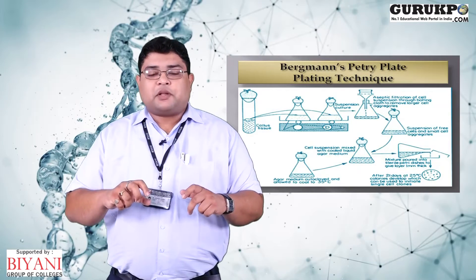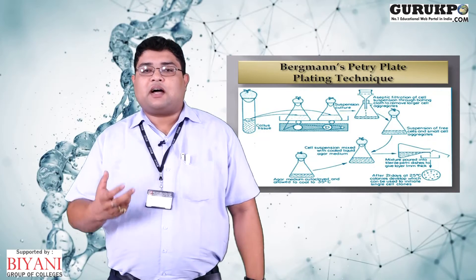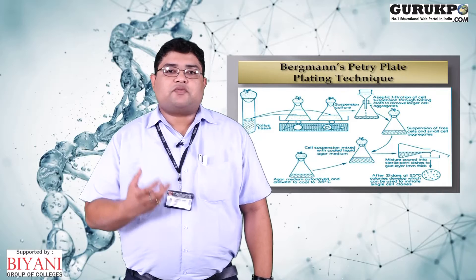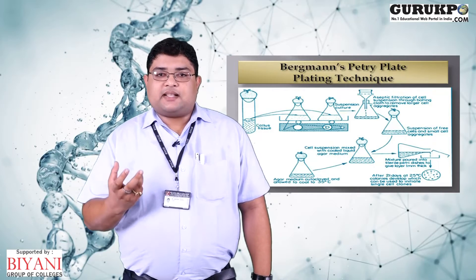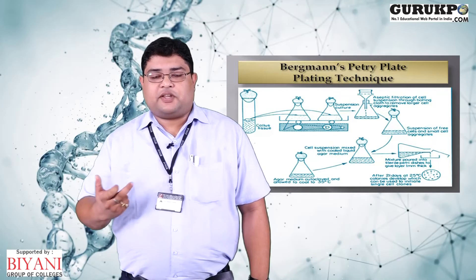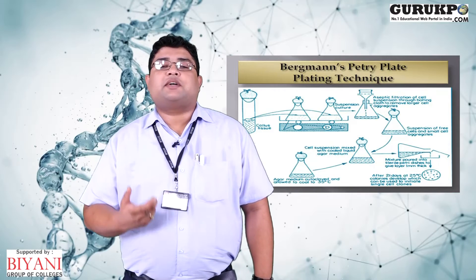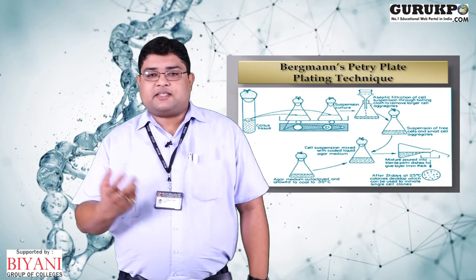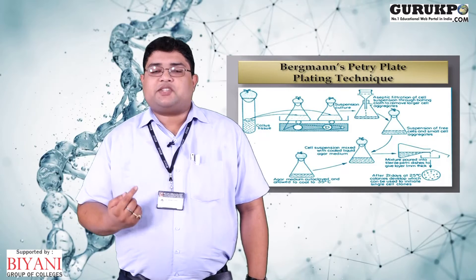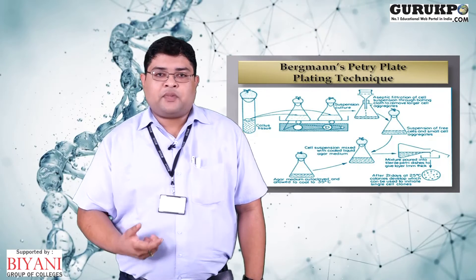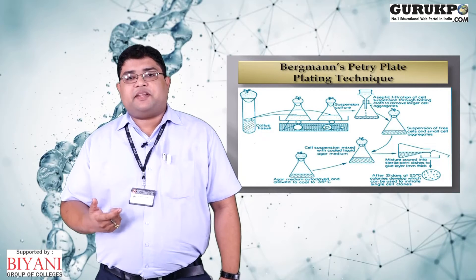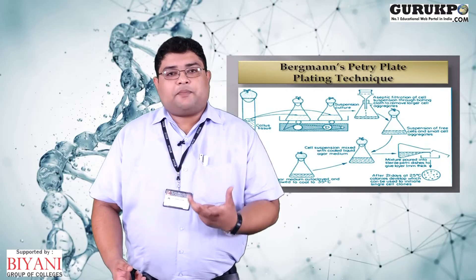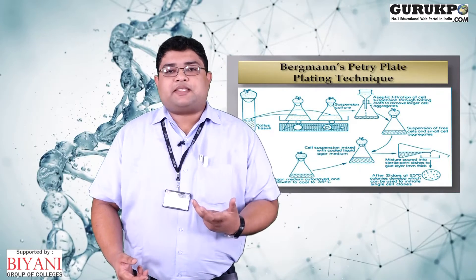Both mixtures are combined to prepare a final mixture containing agar, MS media, and cells. At 35°C, this solution is poured into petri plates so that single cells can be distributed at different locations. The petri plates are then allowed to solidify at around 25°C. These petri plates are examined under a microscope and the number of cells is counted. After 25 days of incubation at 25°C ± 2°C, the number of cell aggregates on the petri plates is counted again and the plating efficiency of the growing cells is determined.